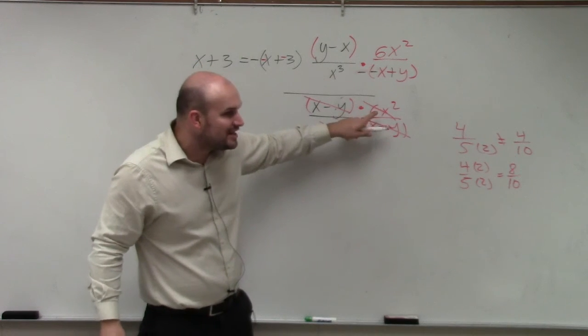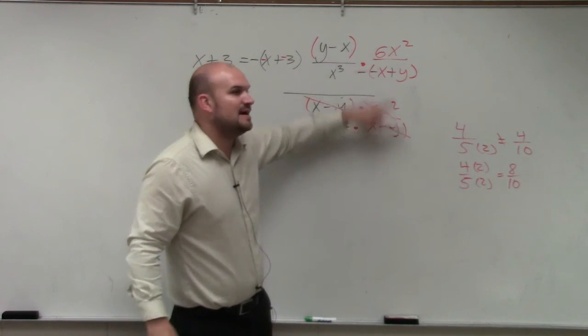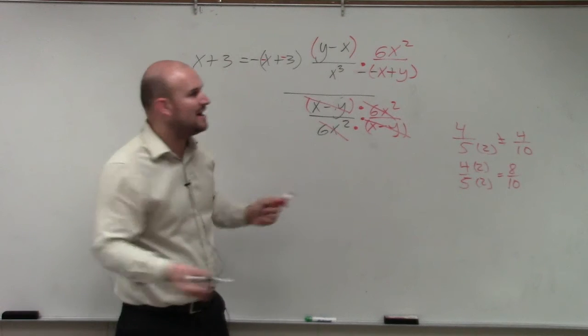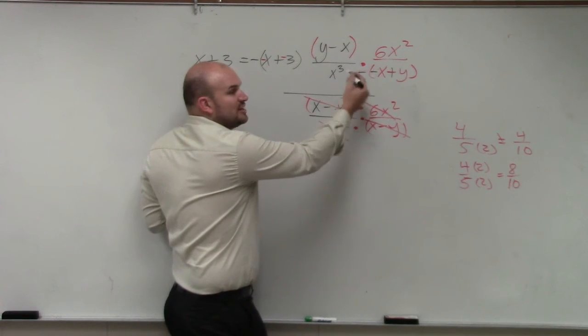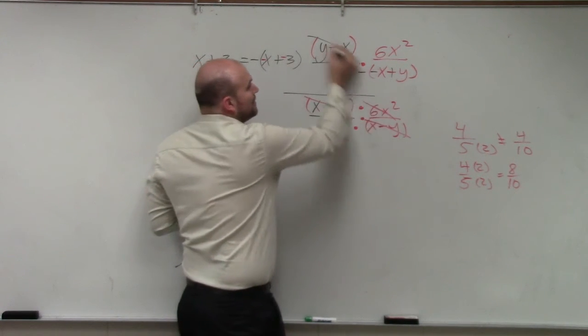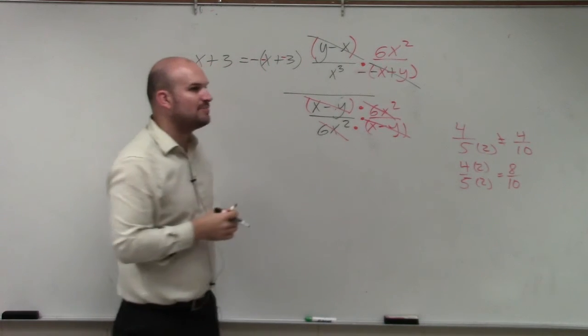By multiplying by the reciprocal, I changed the value, right? That's why I had to do that on top and bottom. But factoring, I didn't change the value. I just changed the form. So now I can apply the division property.